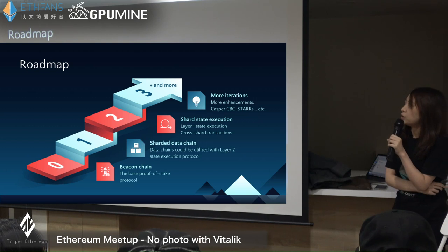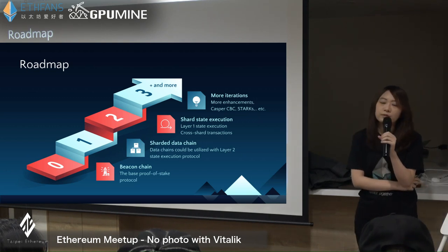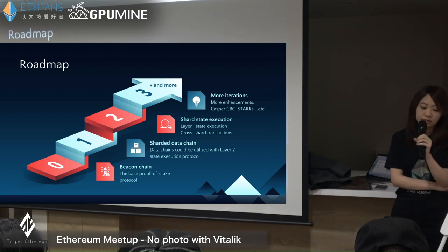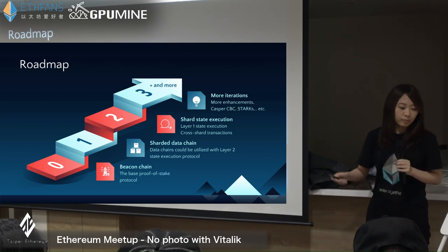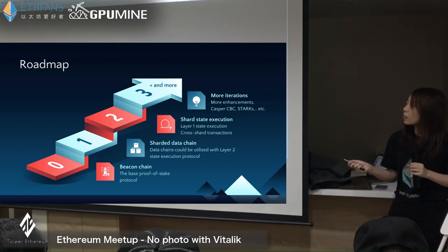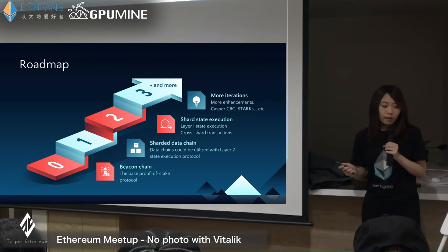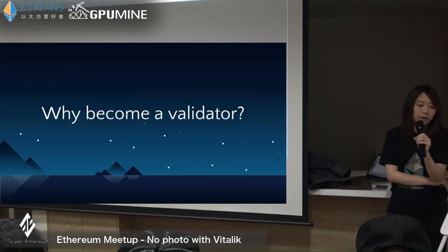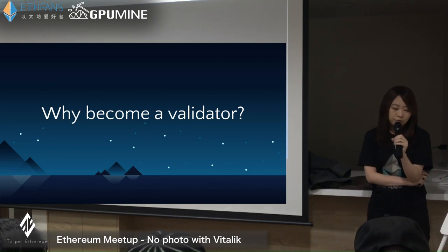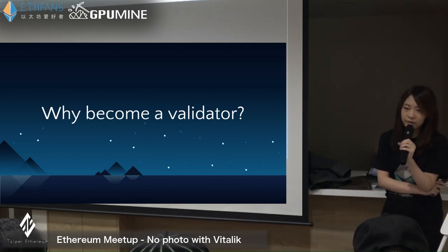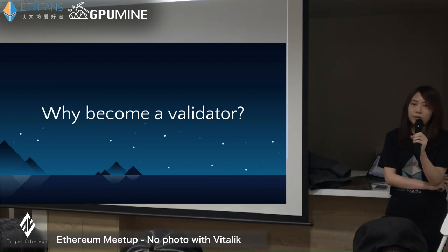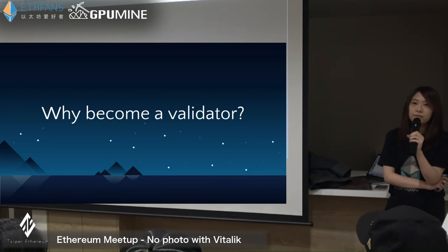Then we can do more iterations on the 2.0 shard chains. There are some iteration ideas, for example Casper CBC and making a STARK-friendly system. So let's talk about the Beacon Chain and introduce the Beacon Chain validator.